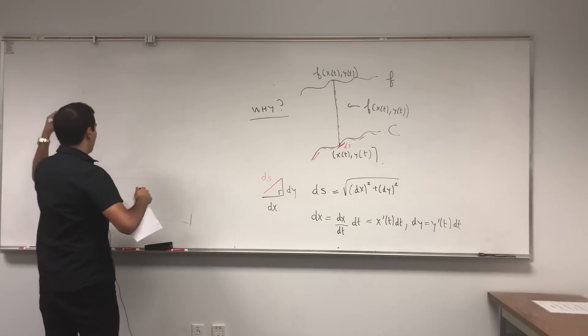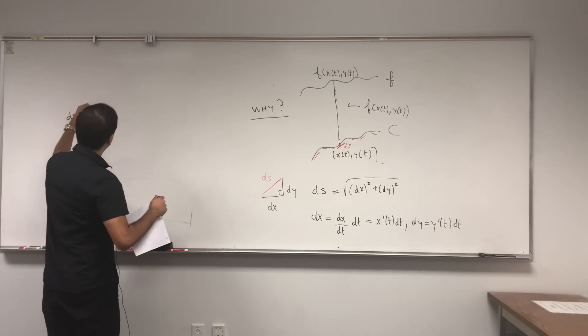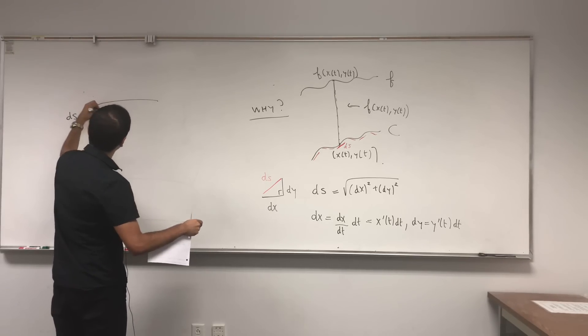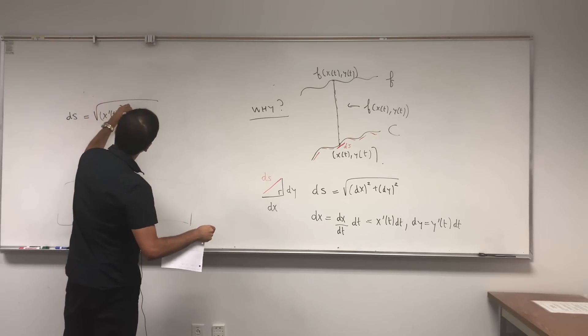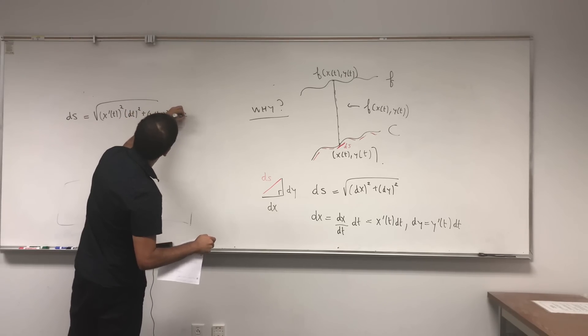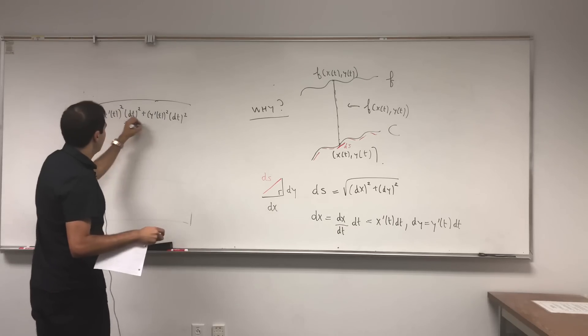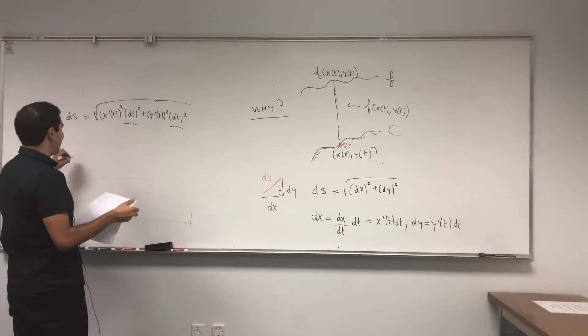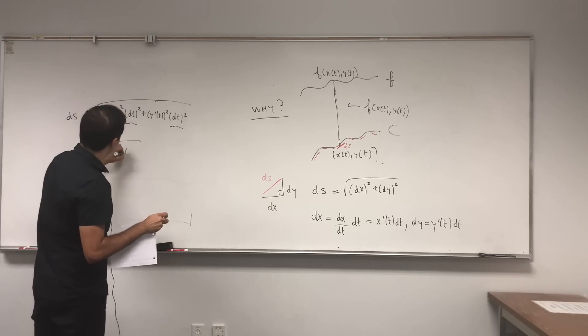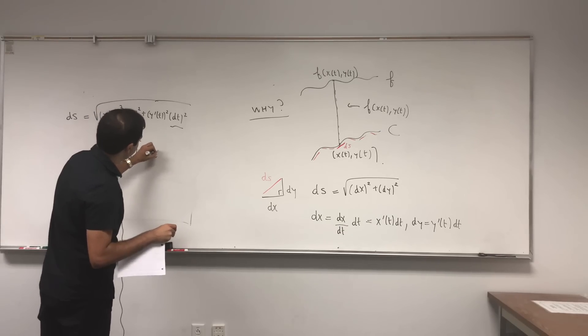We get that, well, dS is square root of x prime of t squared dt squared plus y prime of t squared dt squared. And look, the dt squared is a factor out, and indeed you get x prime of t squared plus y prime of t squared dt.